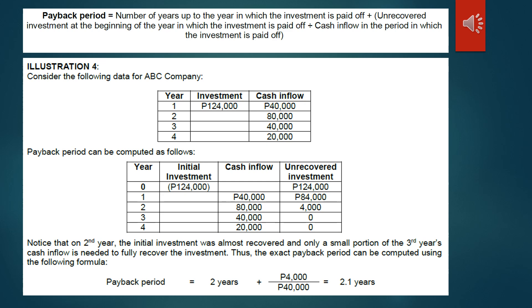Now let us proceed to the payback period with uneven cash flows. The formula is: number of years up to the year the investment is paid off, plus the unrecovered investment at the beginning of that year, divided by the cash inflow in the period the investment is paid off. For ABC Company, the investment is 124,000 pesos, with cash inflows of 40,000, 80,000, 40,000, and 20,000 on respective years 1 through 4. The initial unrecovered investment is 124,000.